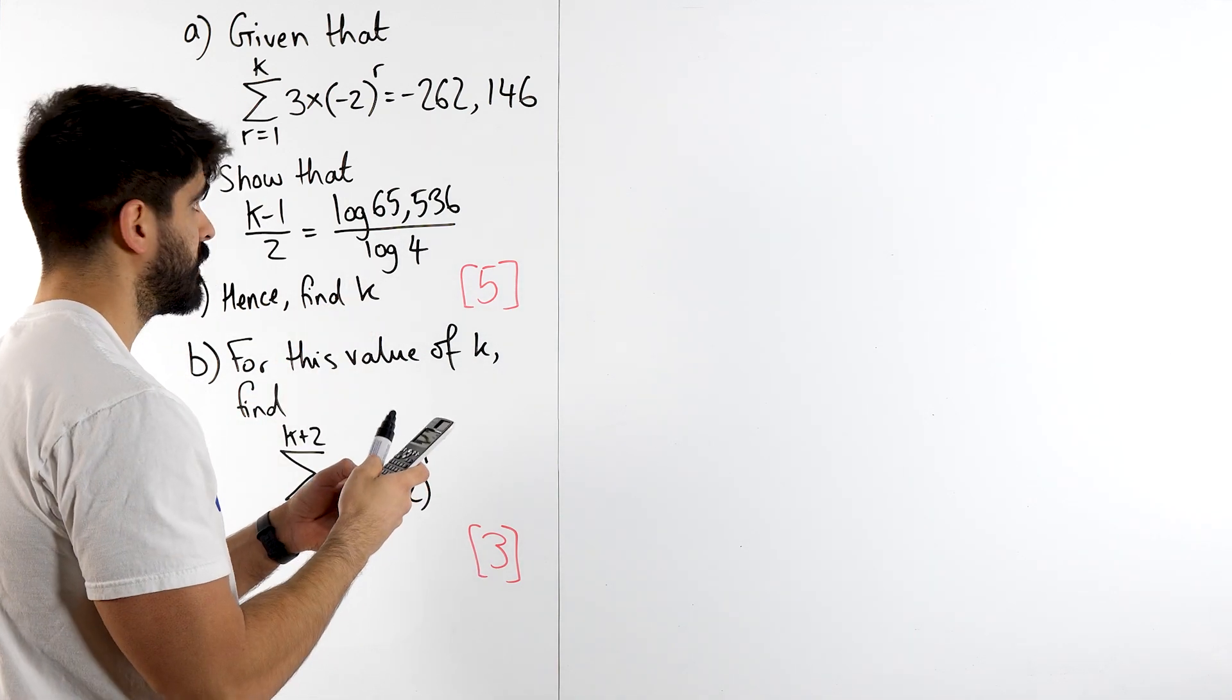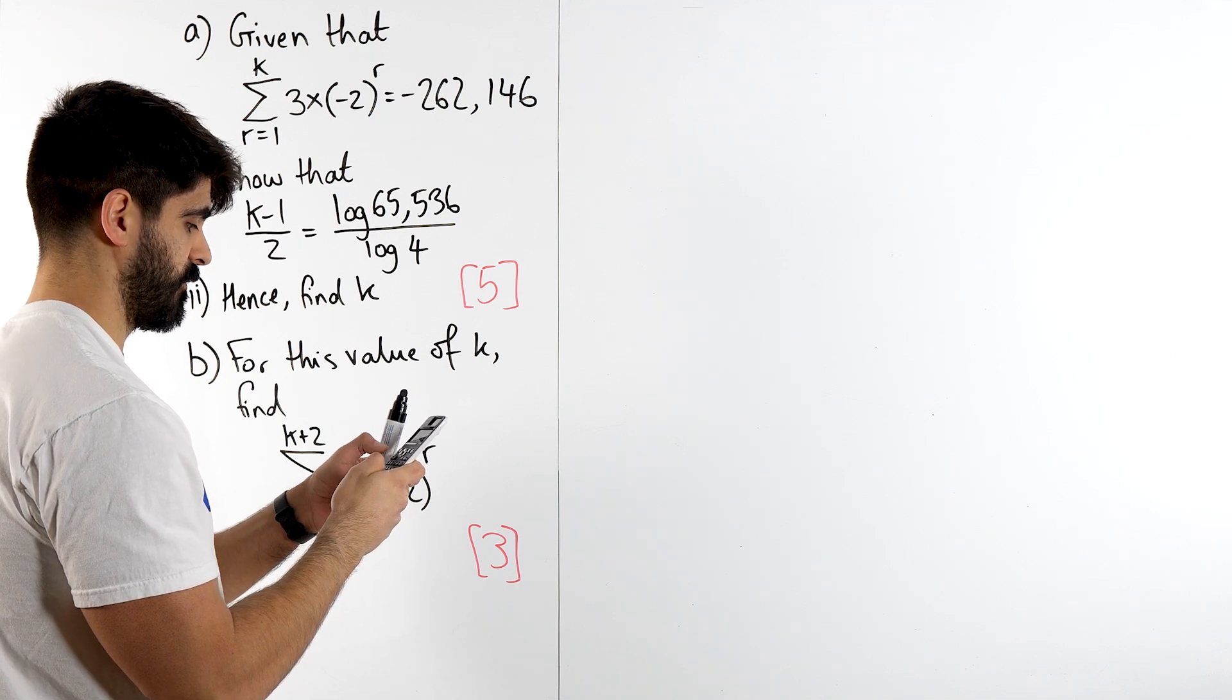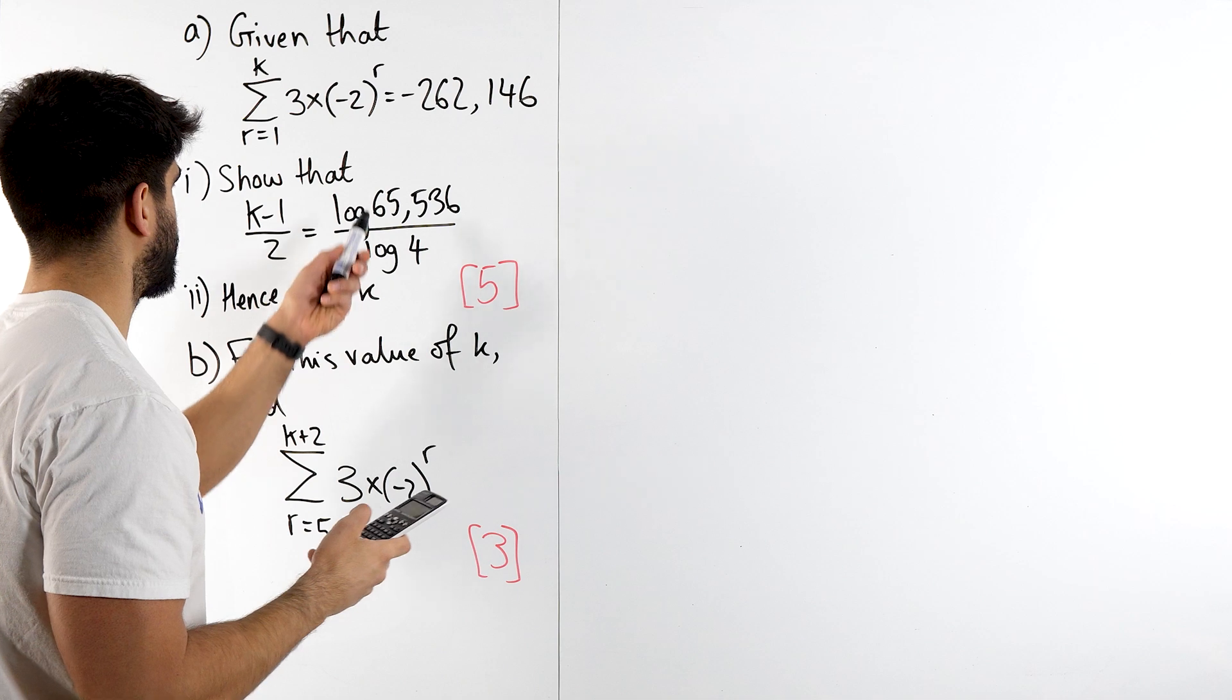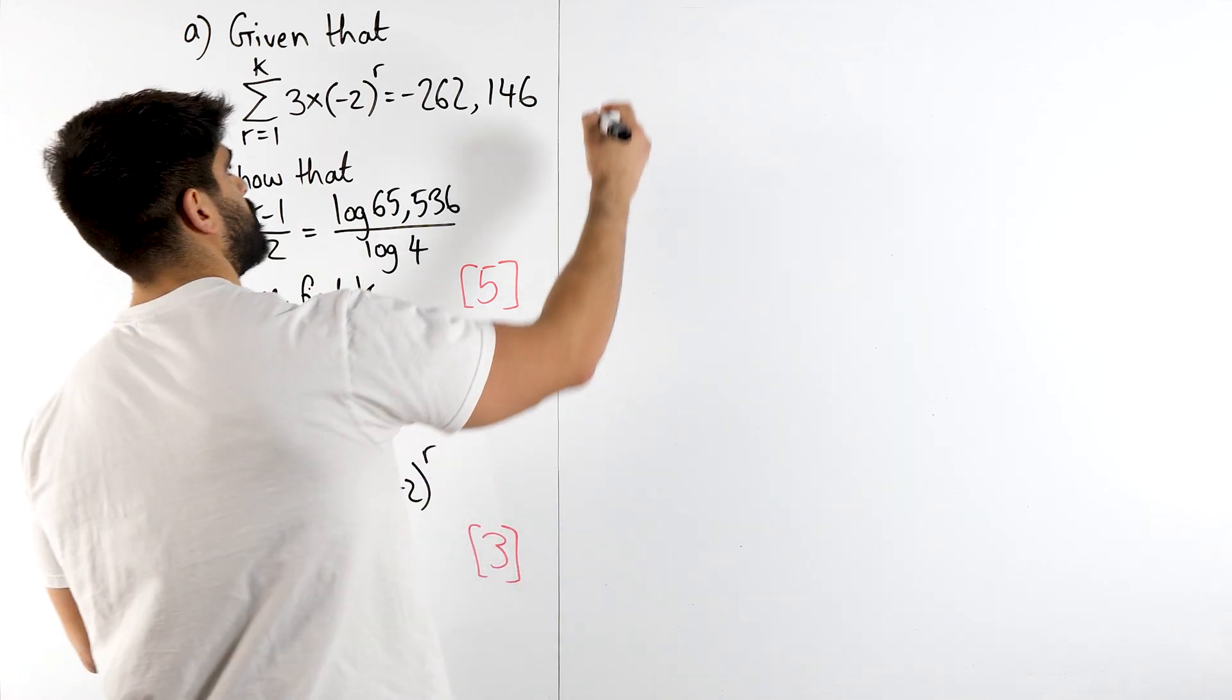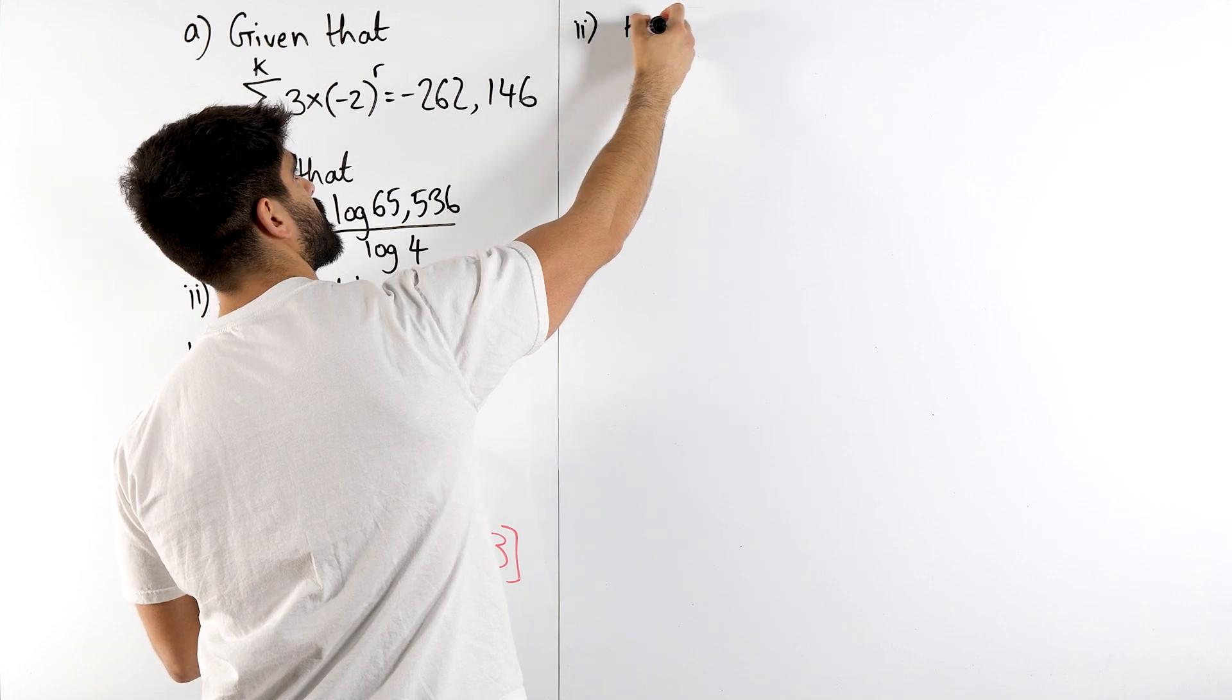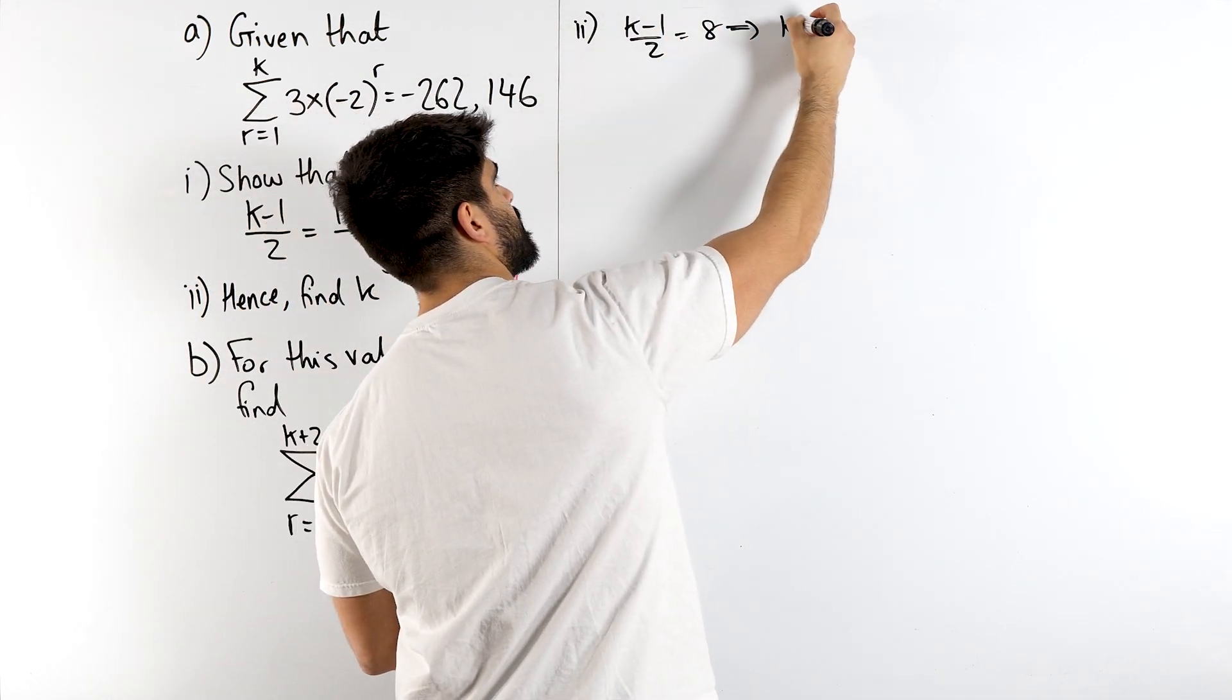So I get log of 65,536 over log of 4 gives us 8. So for part 2, we have k minus 1 over 2 is 8 times by 2 add 1, k is 17.